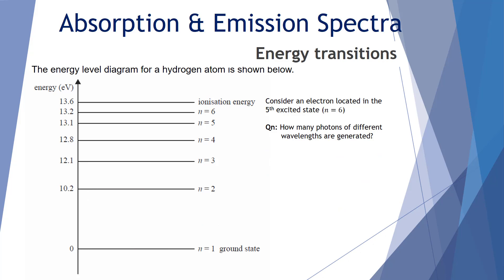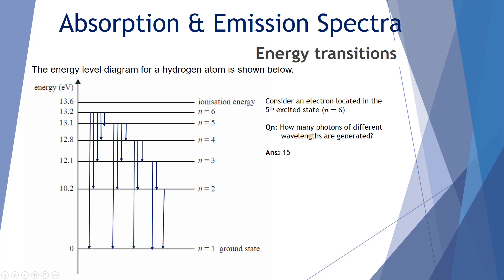Consider an electron located in the fifth excited state, n equals 6. How many photons of different wavelengths are generated? From n equals 6 there are 5 possible drops. Then from n equals 5 there are 4 more, giving 9. From n equals 4 there are 3 more, giving 12. From n equals 3 there are 2 more, giving 14. From n equals 2 there is 1 more. That gives a total of 15 different transitions, or 15 photons of different wavelengths.